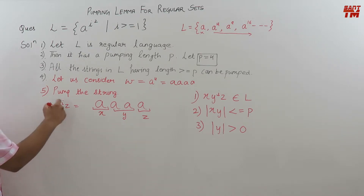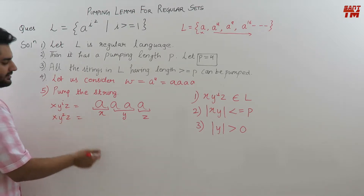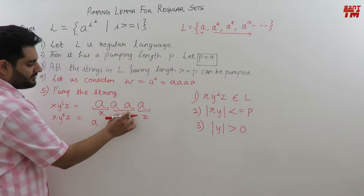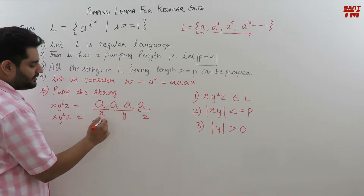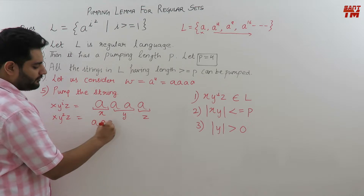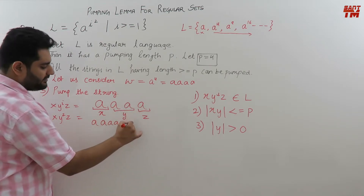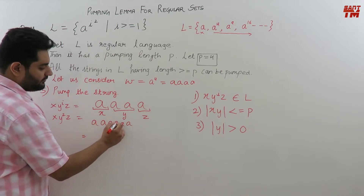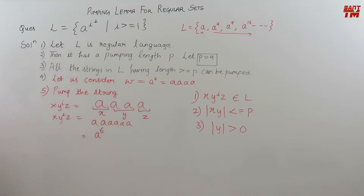If I increase the value of i to be 2, that means x·y²·z: x will contain a as it is, y² will contain 4 a's because one y contains 2 a's, so y² will contain 4 a's — 1, 2, 3, 4 — and the a of z will be as it is. So if you count this: 1, 2, 3, 4, 5, 6 — it is a raised to the power 6. So we have pumped the string now.